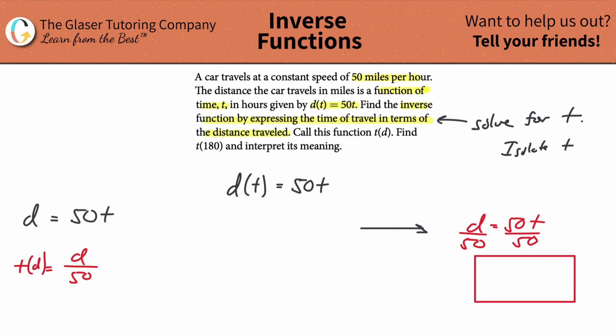What this is saying is that find t(180), the 180 represents the distance. So if the 180 represents the distance, in other words it's simply going to look like this, that the time is equal to 180/50.